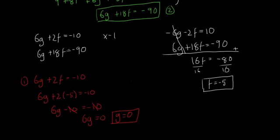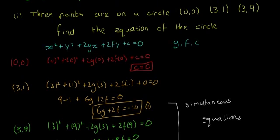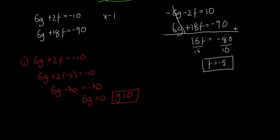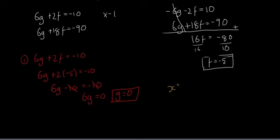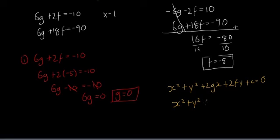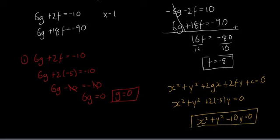So in this case g = 0, f = −5, and c = 0. Most of the time this won't happen, but it did here. Writing the final answer in the form x² + y² + 2gx + 2fy + c = 0: with g = 0 the 2gx term drops out, and 2fy becomes 2(−5)y = −10y. So the final equation of the circle is x² + y² − 10y = 0.